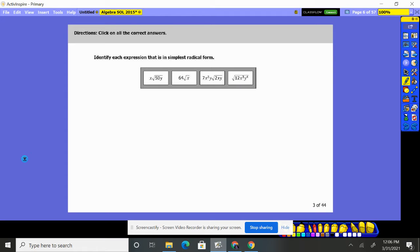Problem three says identify each expression that is in simplest radical form. That means there's nothing inside the square root that can still come out. In other words, if we have two times two in there, I got a pair so they can come out.